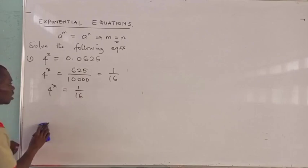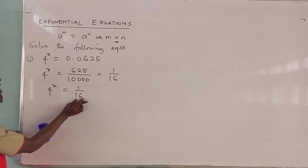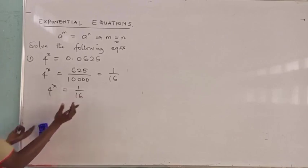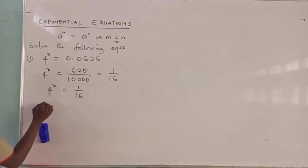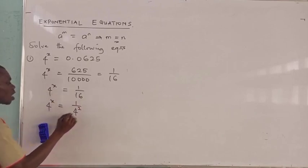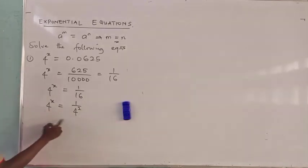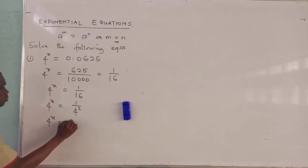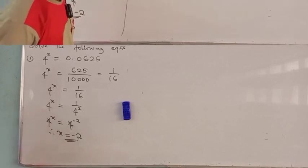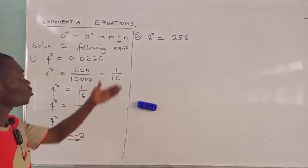Now we can change 16 into base 4. So 4 raised to power x equals 1 over 4 raised to power 2. By the rules of indices, the reciprocal gives us 4 raised to power minus 2. Since the bases are the same, we take them away, and x equals negative 2.